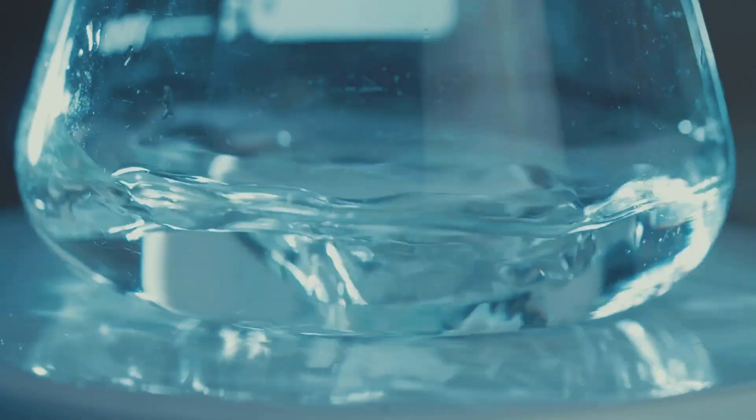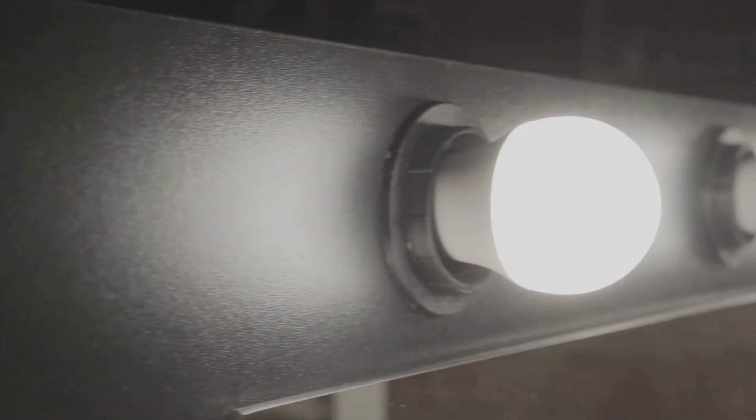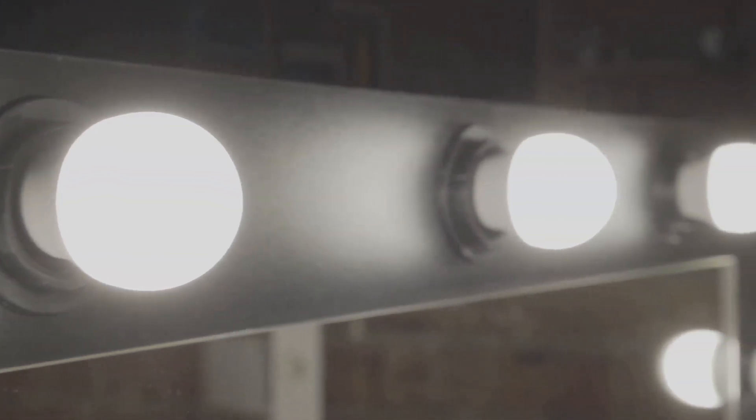This principle explains why light bends when it passes from air to water. It's also why light reflects off a mirror at the same angle it hits it. In each case, light is taking the fastest route possible.